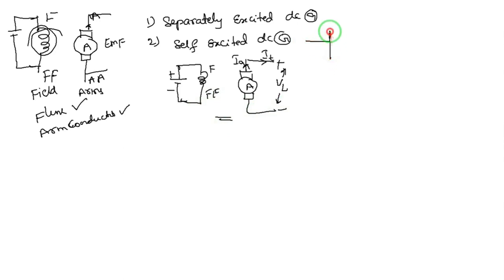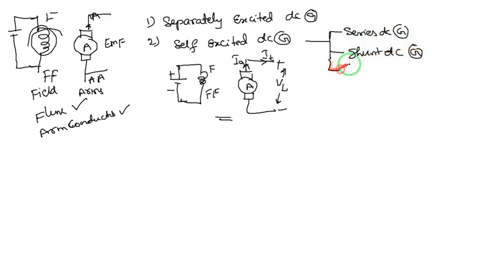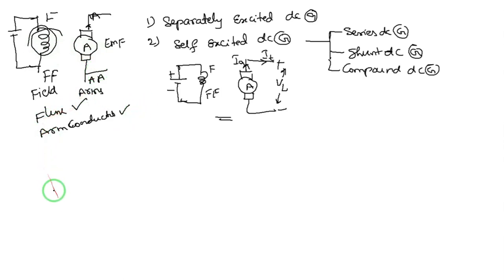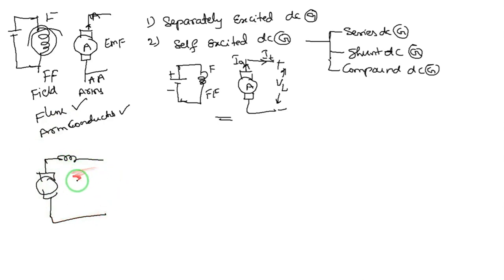For the self-excited DC generator there are three types: series DC generator, shunt DC generator, and compound DC generator. In a series DC generator, the two windings — armature and field — are connected in series. The field winding resistance is represented as R_SE because of the series resistance. The load voltage and load current IL appear across the load.